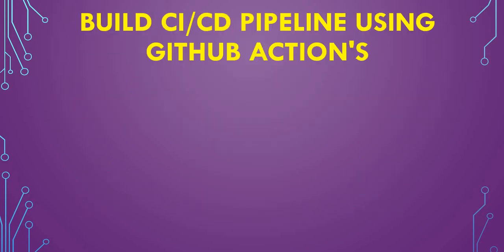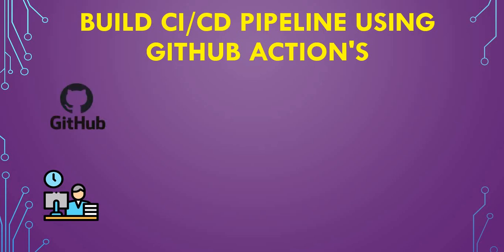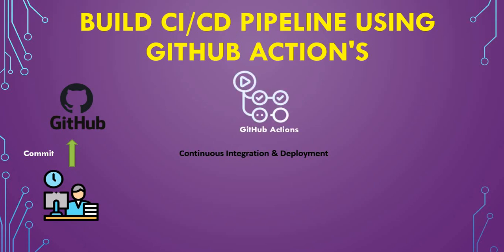So the complete tutorial covers how the pipeline works and how you can make use of a GitHub Actions workflow. Consider the scenario where you are a developer who codes your application and pushes it to GitHub. You commit your code to GitHub, and from GitHub we are going to develop a continuous integration and deployment using GitHub Actions — similar to Jenkins or GitLab.